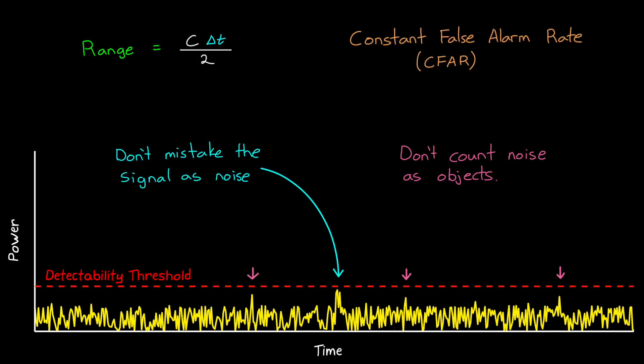The constant false alarm rate, or CFAR, is a common form of adaptive algorithm that's used to set this threshold in order to achieve the required probability of false alarm.